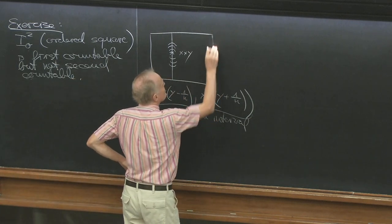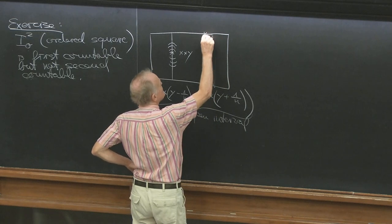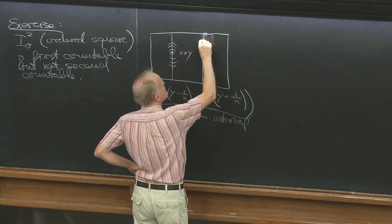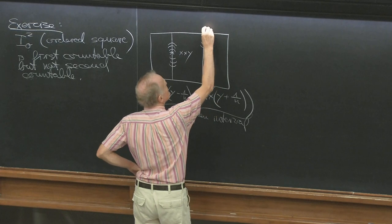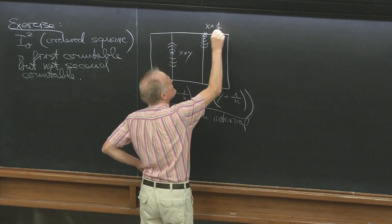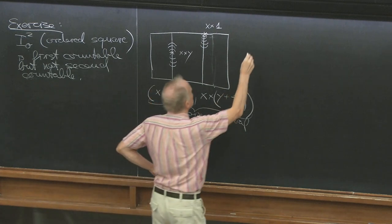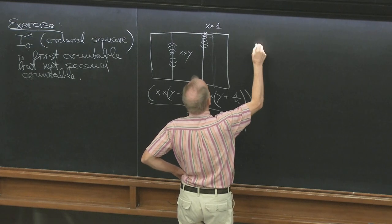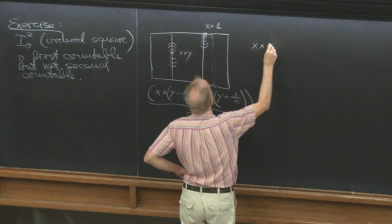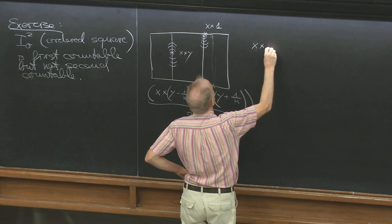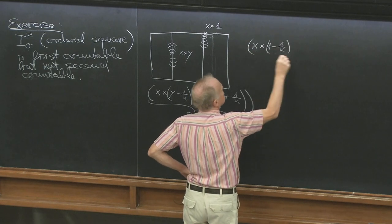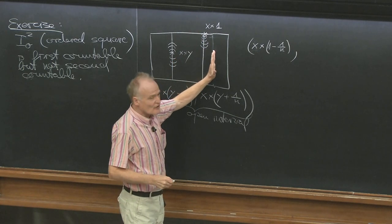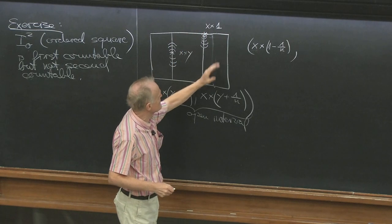If you take a point here — the point x cross 1 — then here we have x cross (1 minus 1/n), creating closer. And on the other side, we have to go here because it's finishing here. So the first coordinate will be x plus 1/n times something. It doesn't matter really.